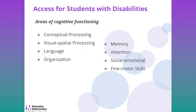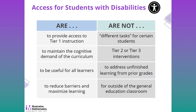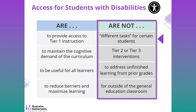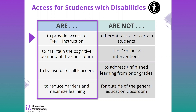Also at the activity level are written-in access supports for students with disabilities, which address areas of cognitive functioning and are specific to the activity and what is needed for students to engage in the math. These are not about different tasks for just certain students, not Tier 2 or Tier 3 interventions, not meant to address unfinished learning from previous grades, and not for use outside of the general education classroom. They provide access to Tier 1 instruction, maintain the cognitive demand of the curriculum, and are meant to reduce barriers and maximize learning for all learners.